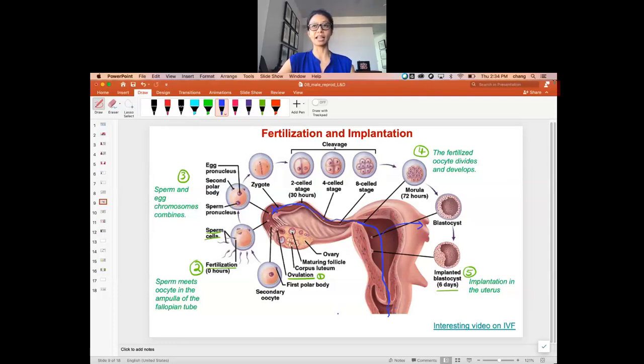The sperm really should be introduced three to five days before ovulation. Sperm can live up to seven days in a female body, so it could be waiting for ovulation to happen. Once ovulation happens on day 14 of a 28-day cycle, the sperm is actually ready and waiting right here in the ampulla to fertilize the egg.